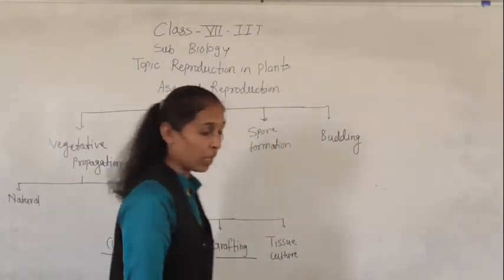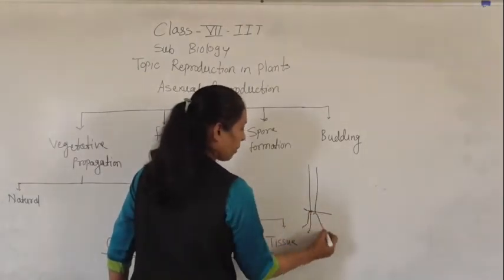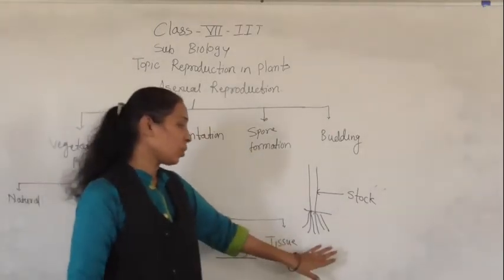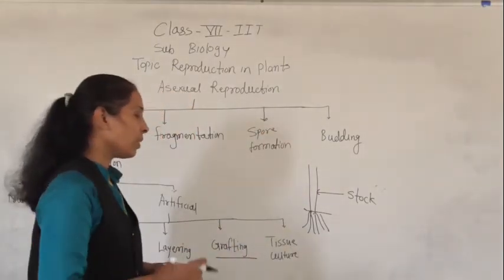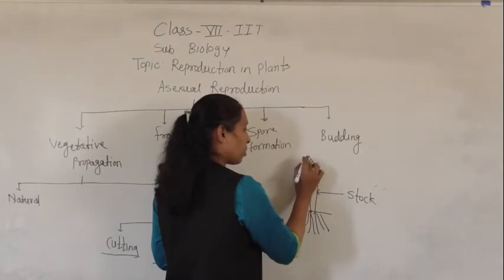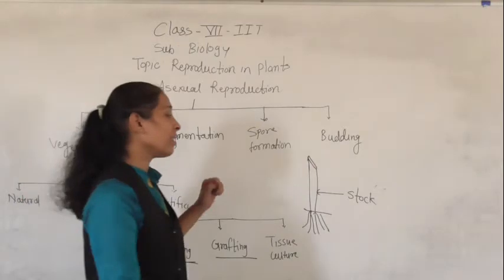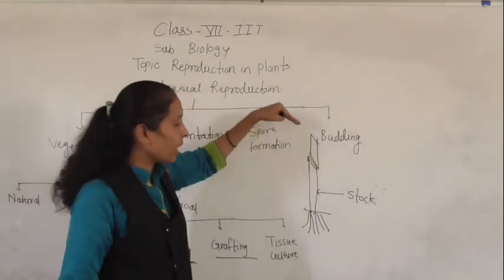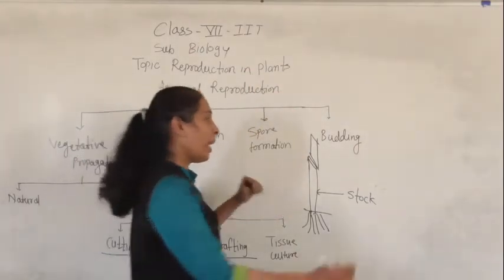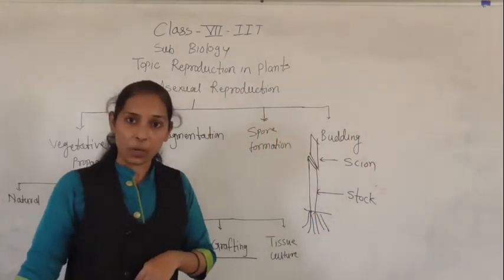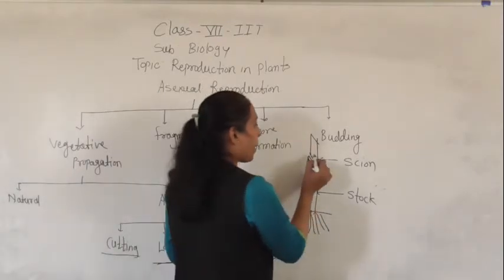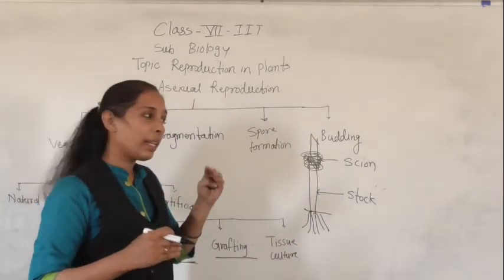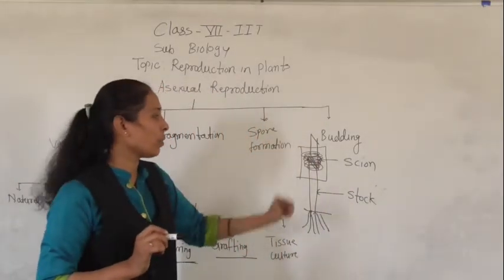For grafting we require two plants. One plant should be a rooted plant, and that plant is called the stock. On that rooted plant we make one slanting cut, and into that slanting cut we insert another plant called the scion. Once we place the scion on the stock, we bind it or tie it very tightly with cloth, and then cover that cloth with a polythene bag.